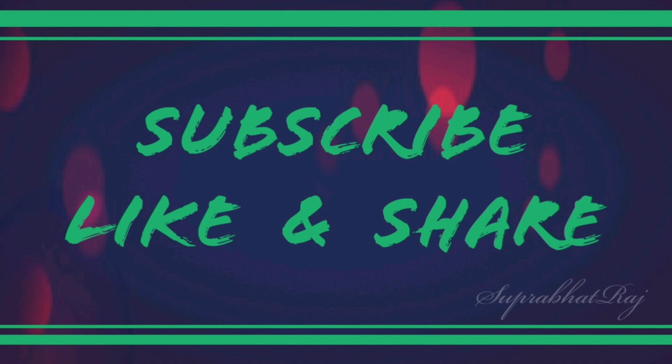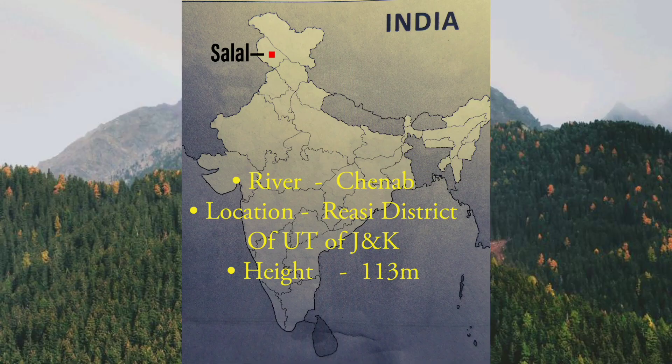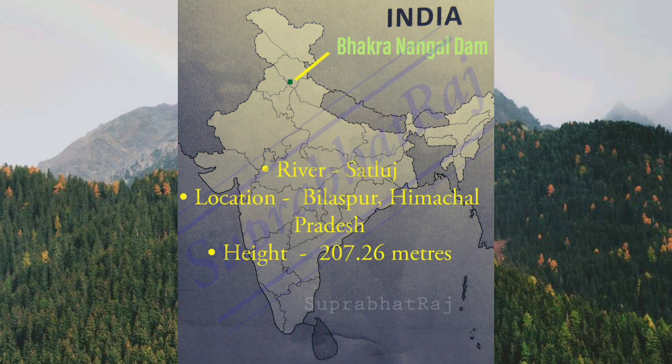The first dam is Salal Dam. It is located on the Chenab River in Reasi district of the Union Territory of Jammu and Kashmir. Its height is 113 meters. Next is Bhakra Nangal Dam — it is the second tallest dam in Asia.